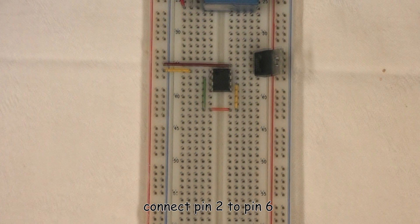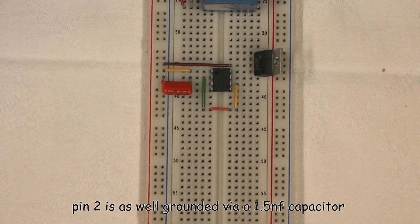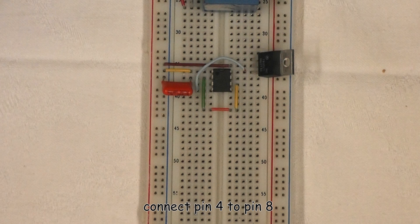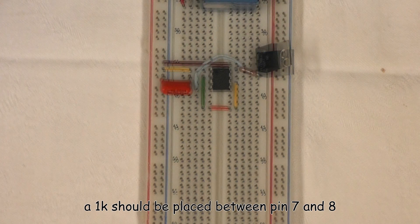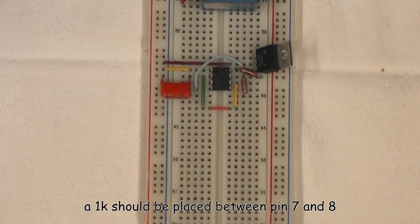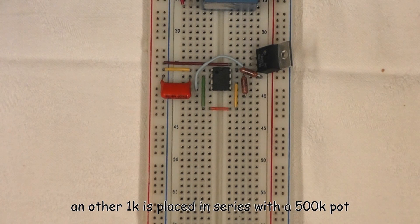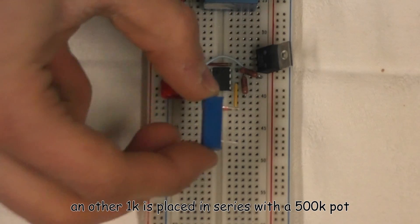Connect pin 2 to pin 6. Pin 2 is as well grounded via a 1.5 nanofarad capacitor. Connect pin 4 to pin 8. A 1K should be placed between pin 7 and 8. Another 1K is placed in series with a 500K pot.